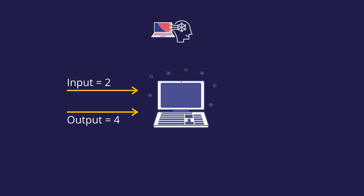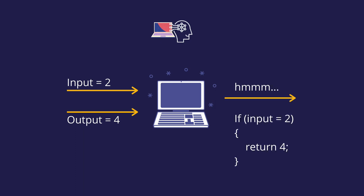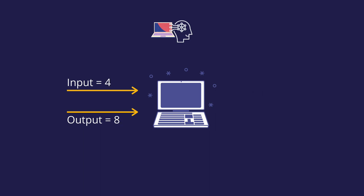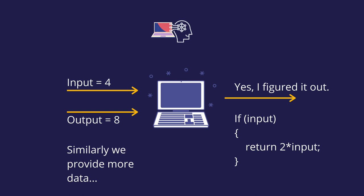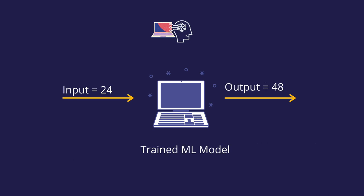For example, you give the input 2 to the computer, and you tell it the output is 4. The computer will start thinking and come up with a simple understanding for this one input-output pair: when I receive input 2, I provide output 4. To make this more generic, we need to provide the computer with more data. So we provide the next input as 4 and the output as 8, and we go on like this until the computer starts to understand that the output is double the input. Once it understands and creates a model for this, if we provide a new unseen input, it will use that model to give an output that is double the input. This is how computers learn — receiving input and output data and over time creating a model to properly function and provide the best output for any new input.